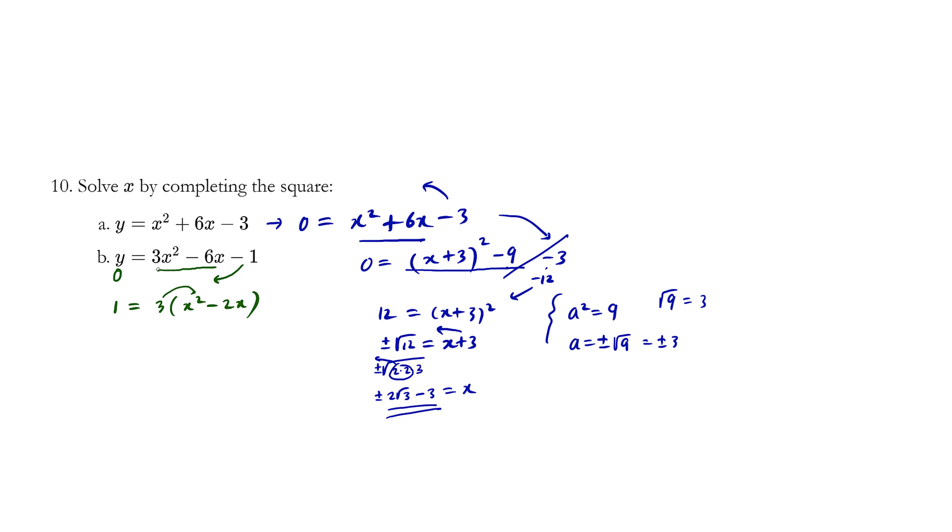So notice how 3 times x squared is 3x squared. And 3 times negative 2x is negative 6x. And we simply threw the negative one over. So we're working pretty quickly here. Let's set up some nice strong brackets here. We haven't begun completing the square yet, but now we will.